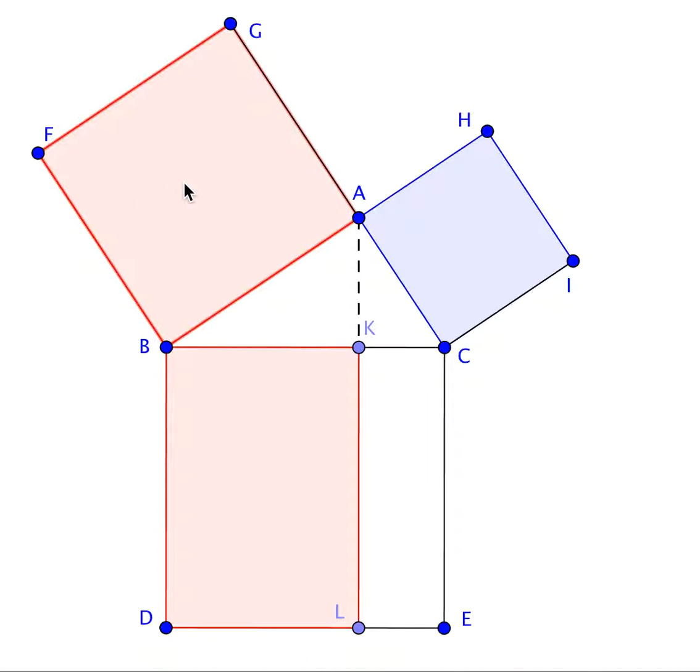Similarly, the same can be shown for rectangle CKLE, which must have the same area as ACIH, which is AC squared. By adding these two results, we have AB squared plus AC squared.